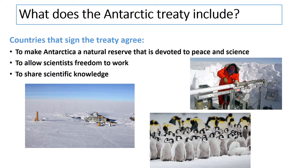The first part of the treaty includes rules about the fact that Antarctica must be devoted to peace and science, and that any scientific research carried out should be shared for the benefit of all mankind. We've seen that with the use of climate change ice core data carried out at the Russian research base at Vostok, being used to help all of mankind get a good understanding of how our climate has changed.